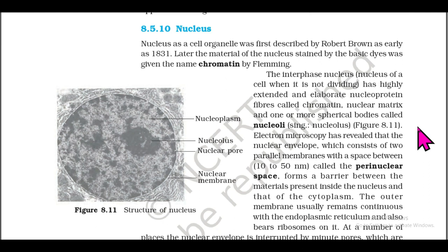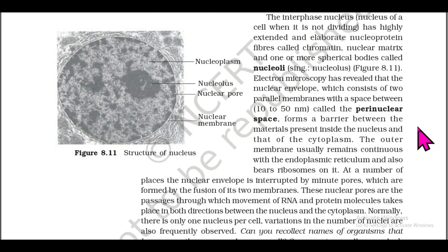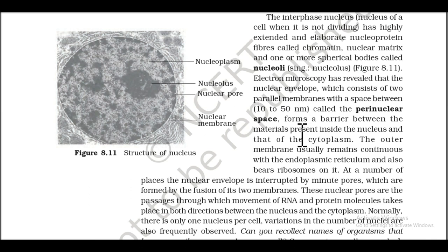Section 8.5.10: Nucleus. The nucleus as a cell organelle was first discovered by Robert Brown in 1831. Later, the material of the nucleus stained by basic dyes was given the name chromatin by Flemming. The interphase nucleus (when a cell is not dividing) has highly extended nucleoprotein fibers called chromatin, a nuclear matrix, and one or more spherical bodies called nucleoli (singular: nucleolus). The nuclear envelope consists of two parallel membranes with a space of 10 to 50 nm between them called the perinuclear space, forming a barrier between the nucleus and cytoplasm.